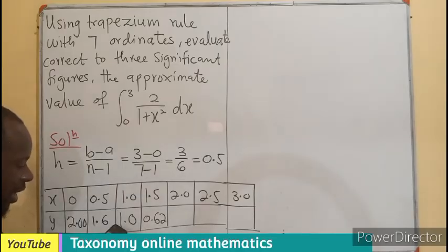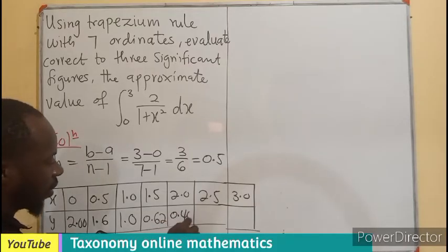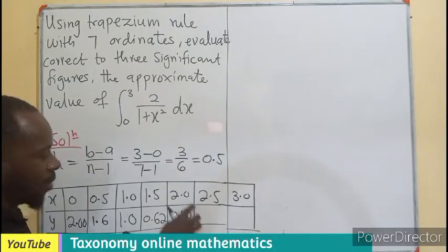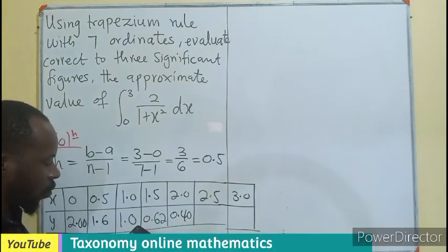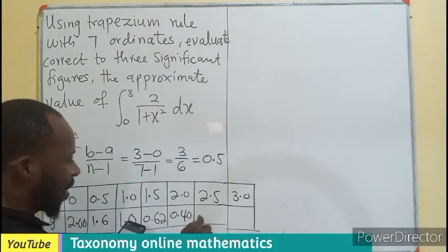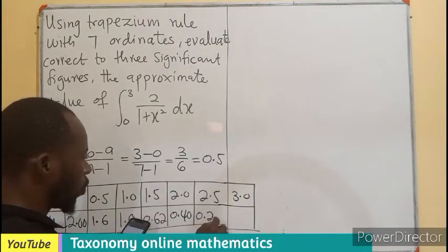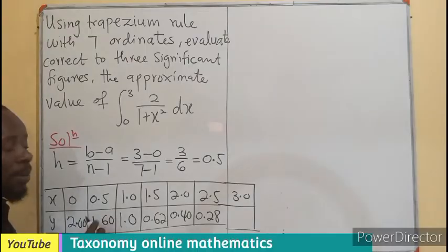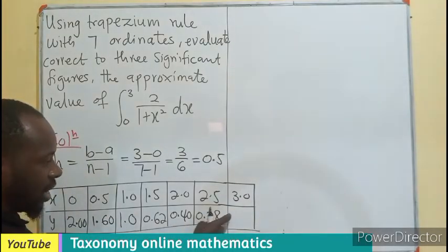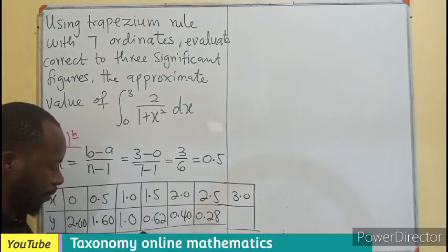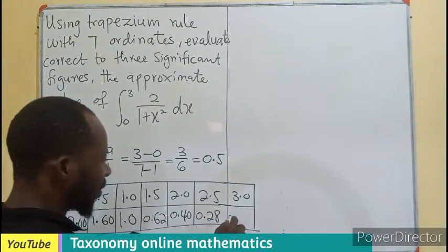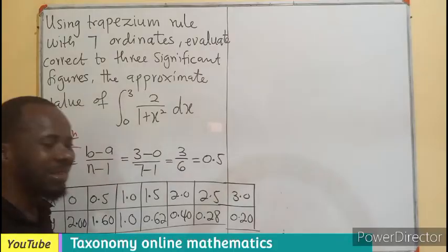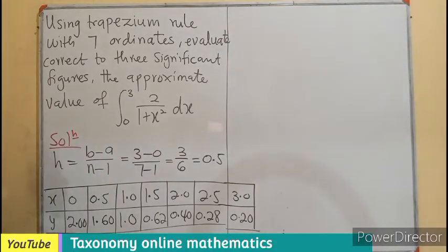Here our x is 1.5 squared, so I'll be having 0.62. Here it will be 2, so 2 squared will be 4, giving us 0.40. The next point will be 2.5 squared in place of x to give us 0.28. Here we have 3, 3 squared, and that gives us 0.2.